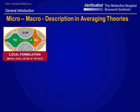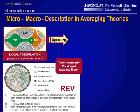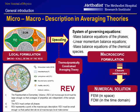The model equations are obtained via the thermodynamically constrained averaging theory, which starts from a microscopic description with reference to a representative elementary volume, which must contain all phases. It must be large enough so that averages of properties are independent of the sample size, and small enough that partial derivatives at the macroscopic level make sense. The governing equations at the macroscopic level are obtained by upscaling.